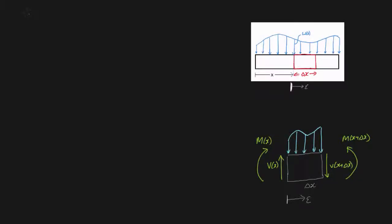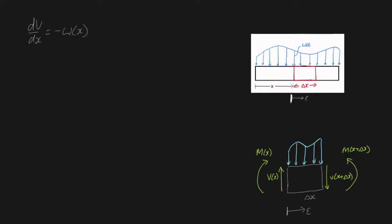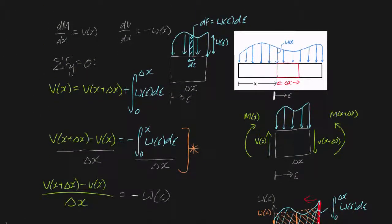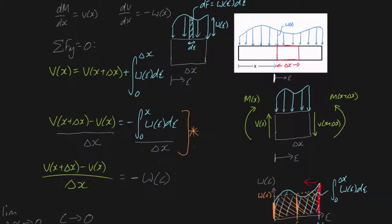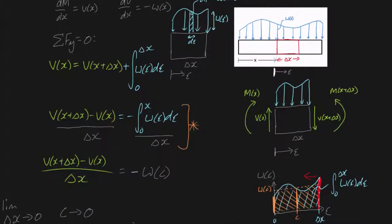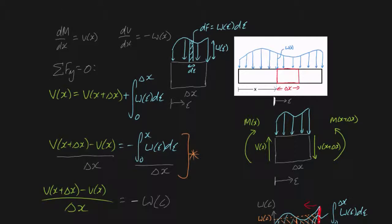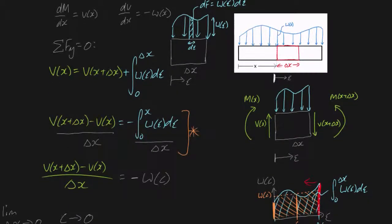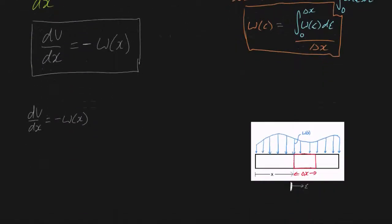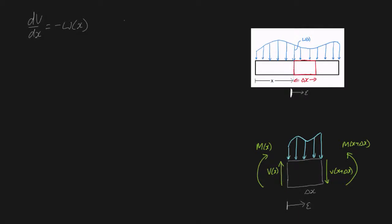Hey guys, in the last video I formally proved the well-known formula that dv/dx is equal to minus w(x). I did that through use of some pretty heavy calculus — it involved complicated terms like the mean value theorem, limits, and whatnot. It was quite challenging, so I definitely recommend you hit up that video first. In this particular video, what I'm going to be doing is showing you how to derive dm/dx = v(x). This is the formula I'm going to be deriving, and it's very involved once again.